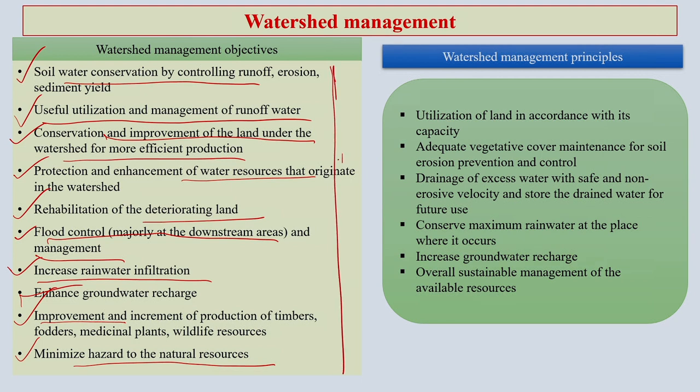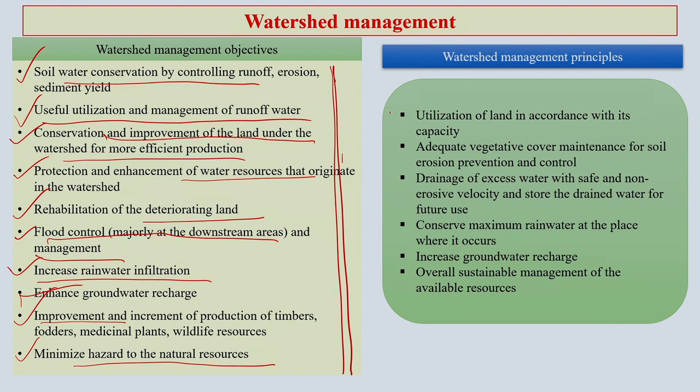These are the various objectives under watershed management. Any kind of management should follow certain principles, and watershed management is no different. Let us see what those are. Number one: utilization of land in accordance with its capacity — we should utilize a particular piece of land on the basis of its capacity, such as fertility and productivity.